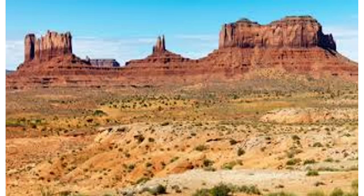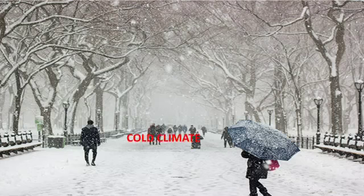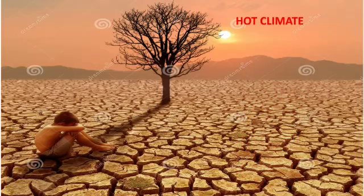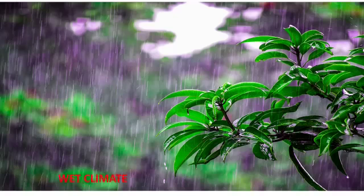The climate of a place is the average weather conditions over a long period of time. A place may be said to have a dry climate, a very cold climate, hot climate, and wet climate depending on the weather conditions over a very long period of time, for example 30 years at least.